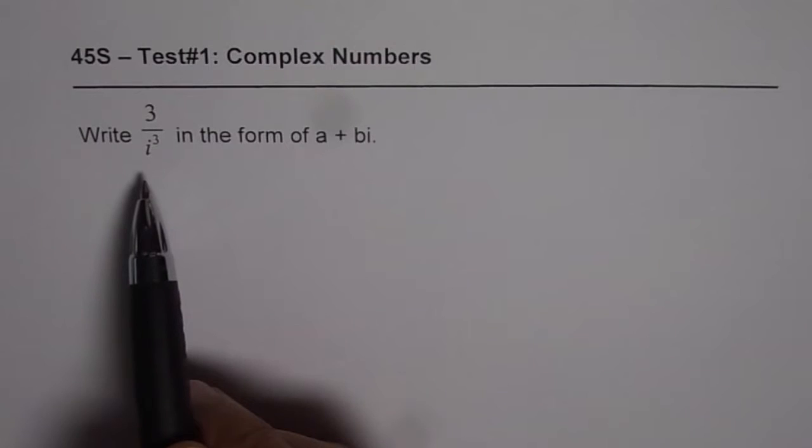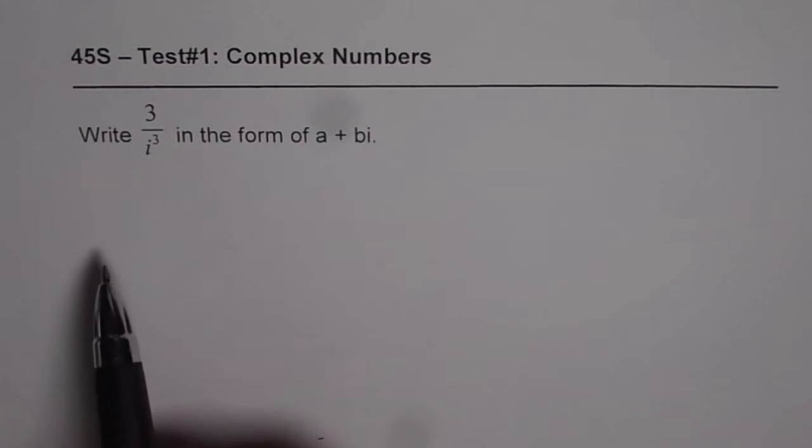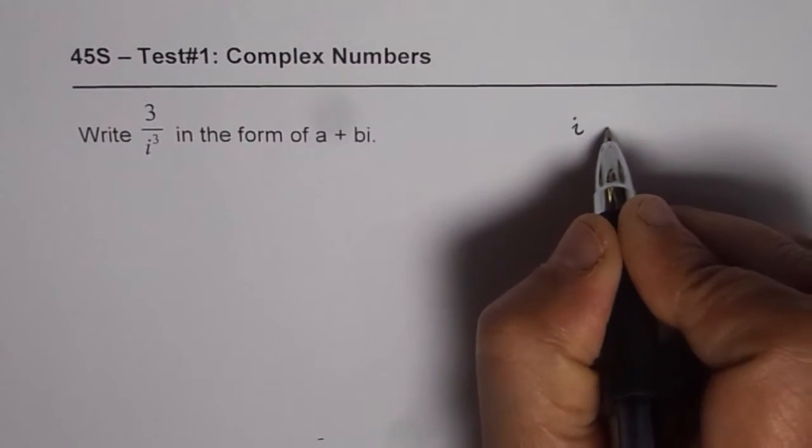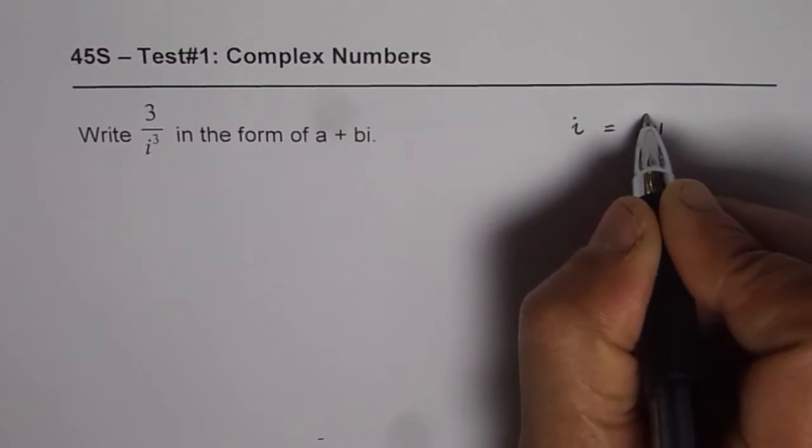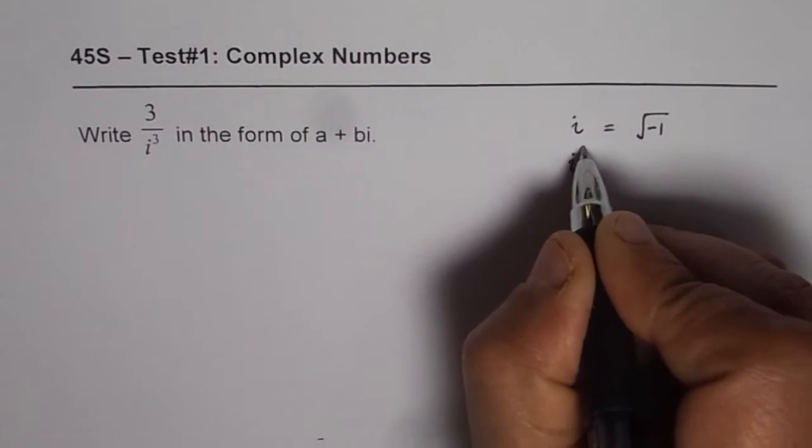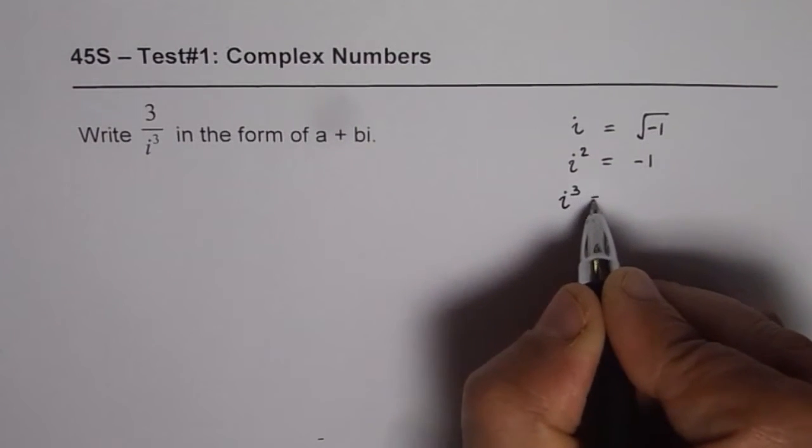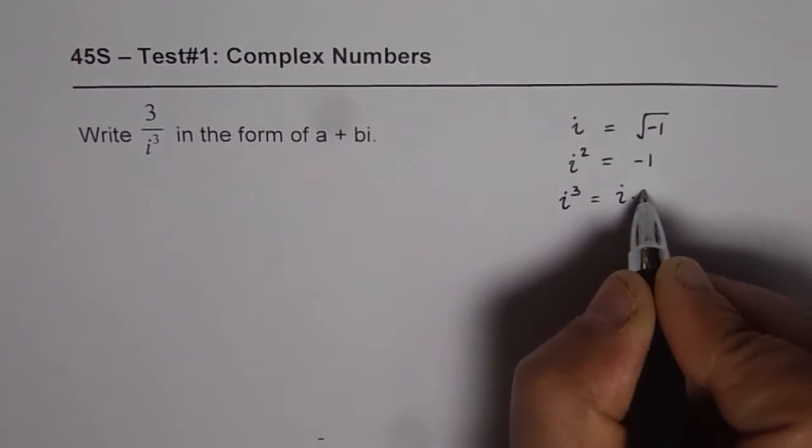So in this particular case, let us rationalize the denominator. Remember a few things: i is equal to square root of minus 1, i square is minus 1, and i cube should be written as i times i square.